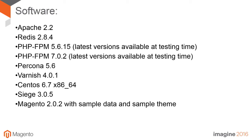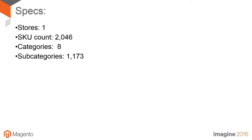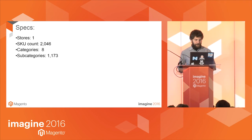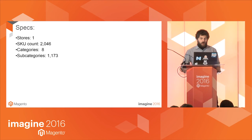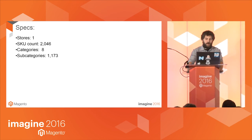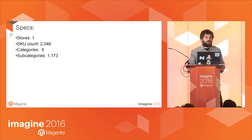Some of these versions are outdated now, but at the time we did the tests these were the latest versions, and that includes Magento 2.0.2 and PHP 7.0.2. Since every store is different and data affects performance, this is the sample configuration data we use for all our tests. We also applied the following standard configurations, all of which conform to Magento 2 best practices.